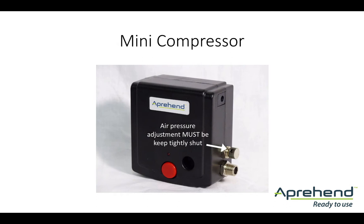This is the portable mini compressor which provides the air to the spray gun. The red button is the on-off switch. It is important to ensure that the air pressure adjustment knob is fully closed. Your unit will have been supplied with this valve in the shut position. If the compressor is used with the pressure valve open, the spray pattern will be inadequate and will result in poor coverage, so check this from time to time.